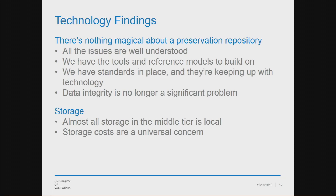Some additional findings in technology: while there are still some unresolved technical problems in digital preservation, for the UC system our challenges aren't really in technology. There's nothing magical about having a preservation repository — all the salient issues have been understood and addressed for a generation. We have lots of tools to do the job and reference architectures to build on. Standards and policies are in place and continuing to evolve. Data integrity at rest is no longer a significant problem — once content makes it to bit-level storage, we're not seeing problems.